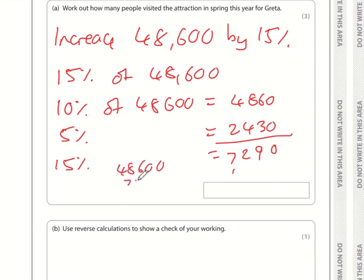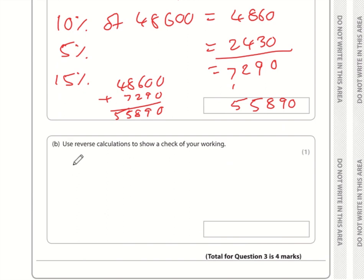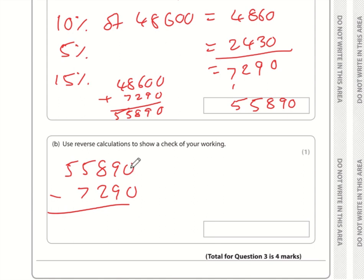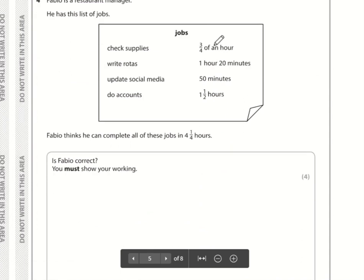So instead of increasing by 15%, we are now adding 7,290. Our final calculation is 48,600 plus 7,290, which gives 55,890. To check using reverse calculation: 55,890 take away 7,290. Zero minus zero is 0, 9 minus 9 is 0, 8 minus 2 is 6, 55 minus 7 is 48 — and that's where we started.